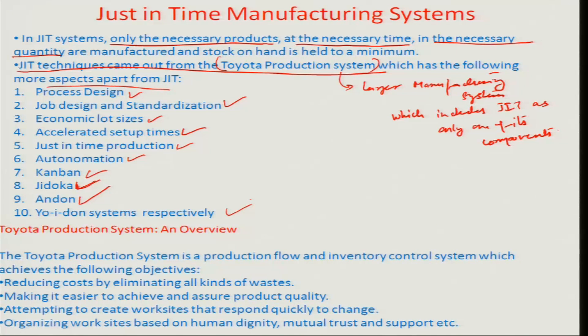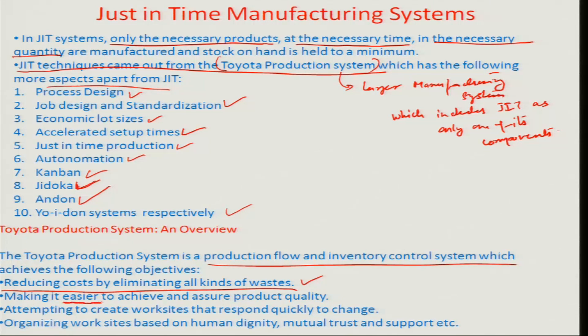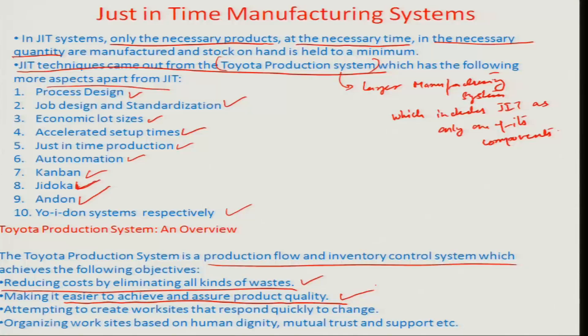The Toyota Production System is really a production flow and inventory control system. It achieves the following objectives: it reduces cost by eliminating all kinds of waste, and it makes it easier to achieve and assure product quality. If the wastage factor is reduced, you handle lesser amounts of load and automatically eliminate loads that were unnecessary or burdensome to a particular workstation. That time can then be used more productively toward planning and implementing quality at that workstation.